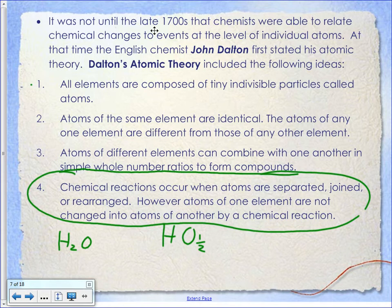Should you know those four points? Yes, they are important. Because there are four of them, they lend themselves very nicely to a multiple choice question on a unit exam — something like 'which of the following is not part of Dalton's atomic theory?' Make sure you know those, especially points three and four, because they talk about what goes on in chemical reactions, and that's going to be the second half of the unit.